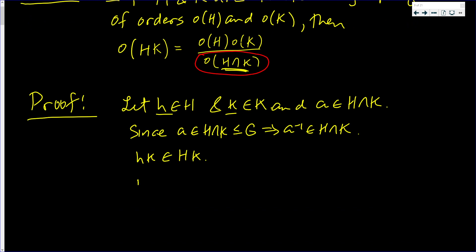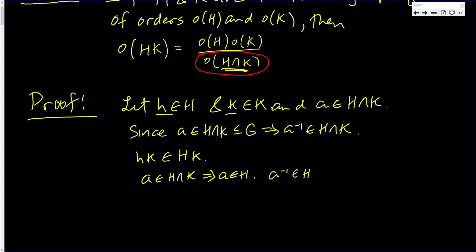Note that hk is also the same. Since a is in H intersect K, that implies a is in H, and a inverse being an element of H intersect K implies that a inverse is in K. So hk equals (ha)(a⁻¹k). This is in H because h and a are both elements of H and H is closed, and a inverse times k is in K because a inverse is in K and k is in K.